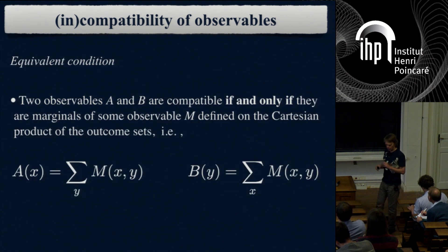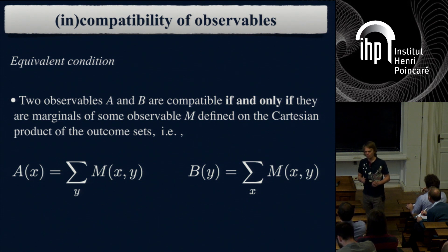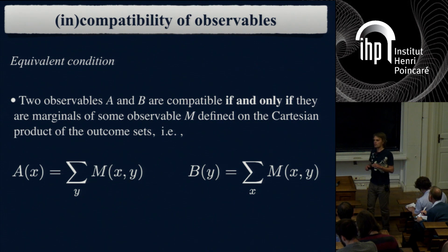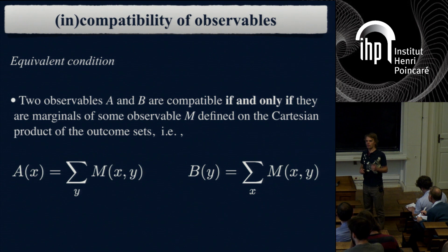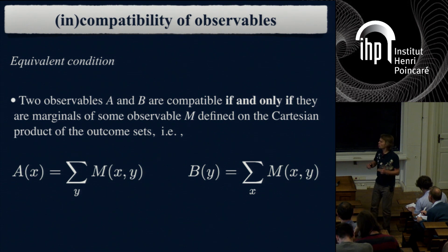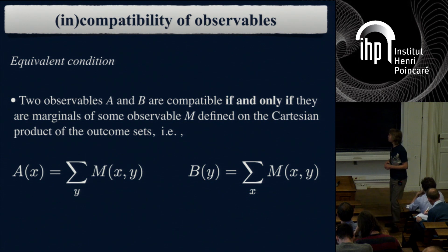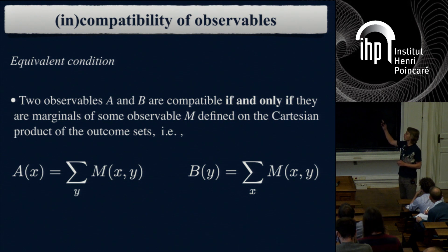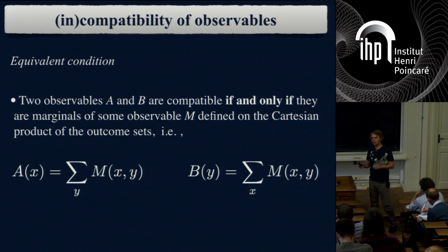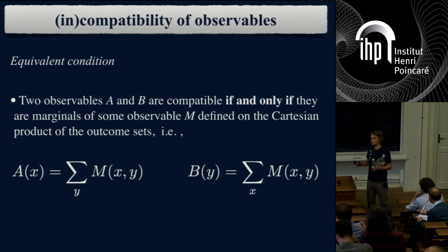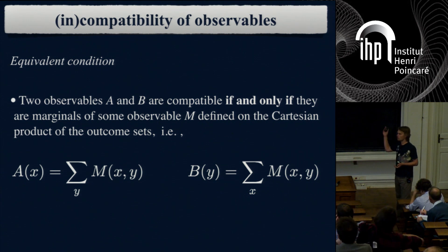There is an alternative definition. You can show—and it's not difficult—that if you can find that M and relabeling functions F and G, then you can also find a joint observable M that gives A and B as marginals. Whenever it's convenient to think about compatibility this way, we use this formulation. But if you first see the marginals definition, you might ask why you insist on writing them as marginals—well, you don't have to, but it leads to the same definition.